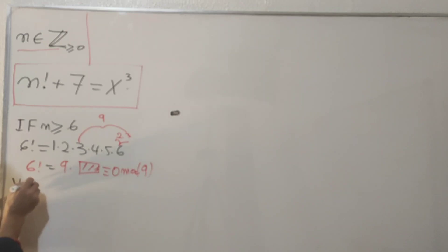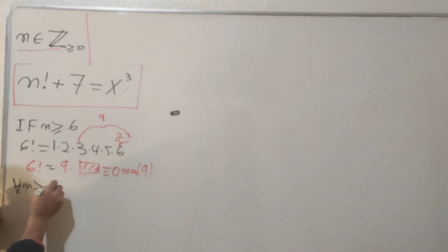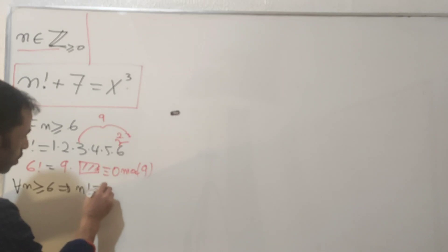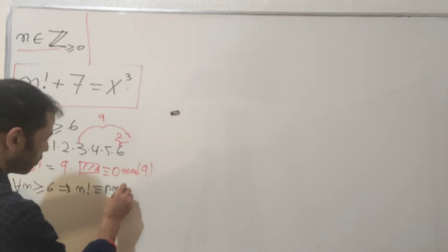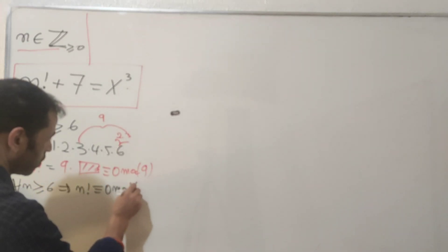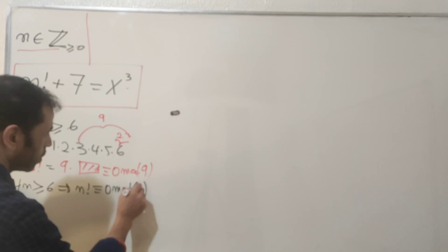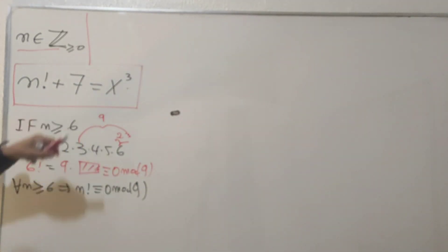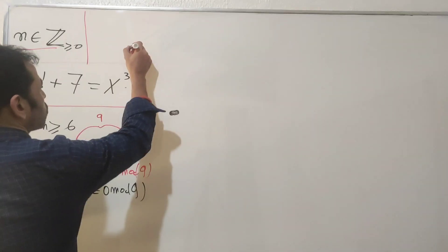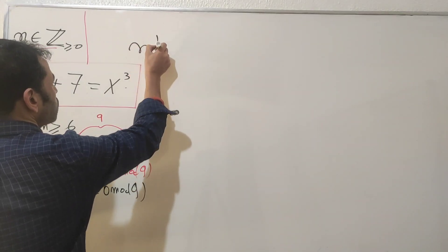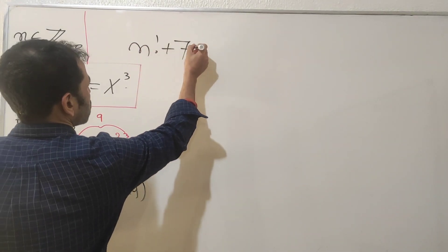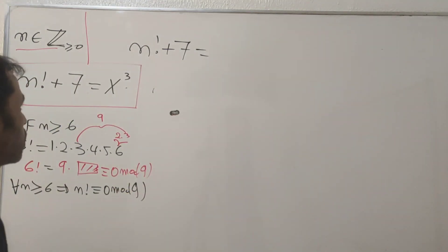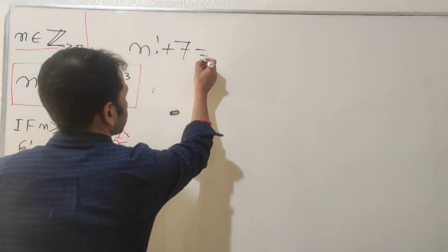Therefore, for all n greater than or equal to six, n factorial is congruent to zero mod nine. Adding seven to both sides, we get n factorial plus seven is congruent to seven mod nine.